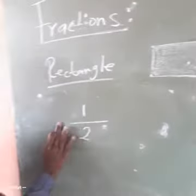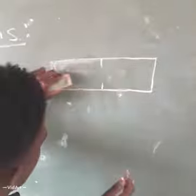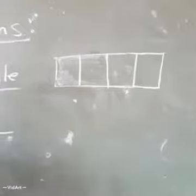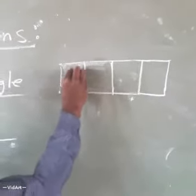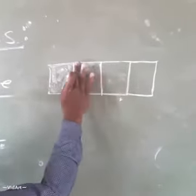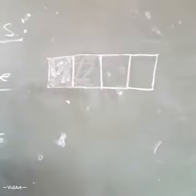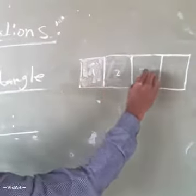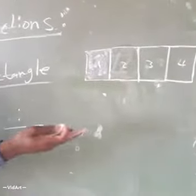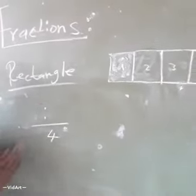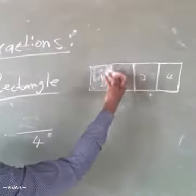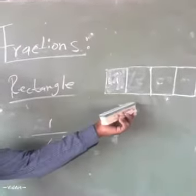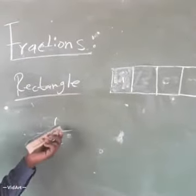For the rectangle divided into four equal parts, counting one, two, three, four — that serves as our denominator of four. The shaded part is only one part. So the fraction of the rectangle here will be one over four.